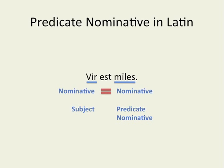The verb sum/esse acts like an equals sign, equating the vir with the miles. Since two nominatives are equated, they must have the same gender, number, and case. The case will always be nominative because it is the predicate nominative.